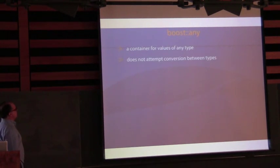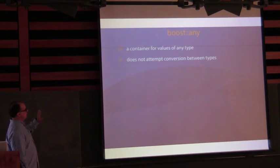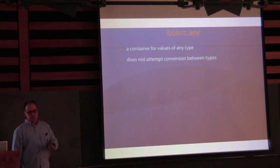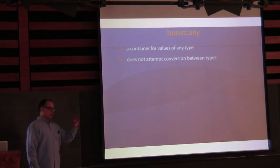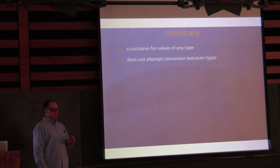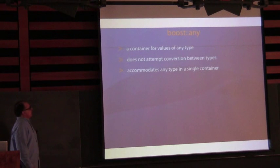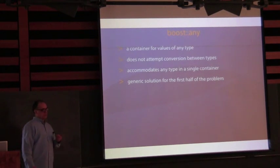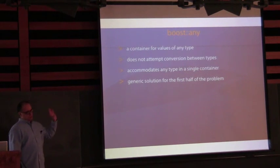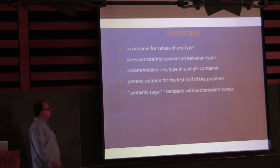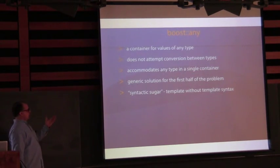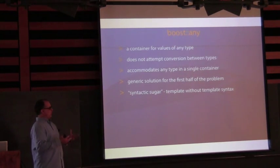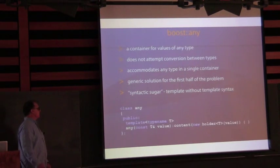Summary of Boost.Any: it's a container for values of any type. It does not attempt conversion between types at all. It's actually stricter than the language itself — if you put in a short and try to get an int, it will throw. Any type in a single container — it's a generic solution for the first half of the problem. We use Any as a basis for the POCO Dynamic Var. The beauty is the syntactic sugar where you get template-like behavior without square brackets, achieved by making the constructor templated.